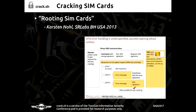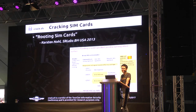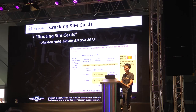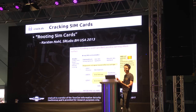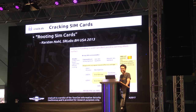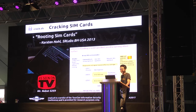Karsten Nohl gave a talk in 2013 about cracking over-the-air updates to SIM cards. Most SIM cards have a full Java virtual machine, and your carrier can send remote updates to update your SIM card firmware — enabling things like listening to your phone calls. He demonstrated that a lot of these cards are secured with single DES, and outlined how you could use a service like Cloudcracker or crack.sh to crack these OTA update keys and install malware into people's SIM cards. This was also featured on Mr. Robot, season 2, episode 9.